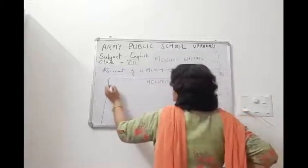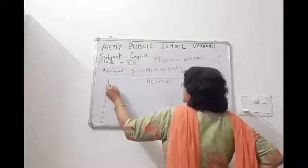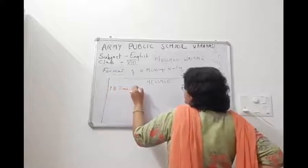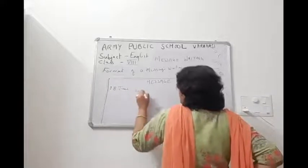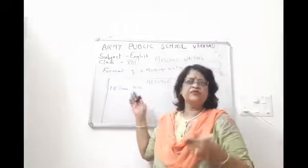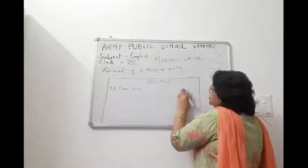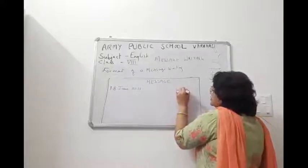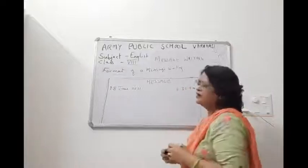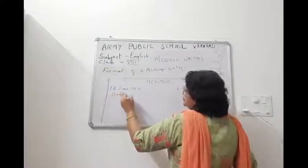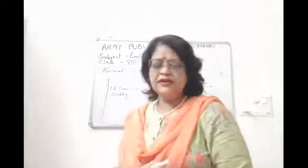Now let's write out the message. You draw a box, write 'Message' at the top in the center. Write the date — for example, 9 September 2021. Since she is going to school, you can write 6:30 a.m. as the time. Then start your message with the salutation: 'Dear Daddy.'